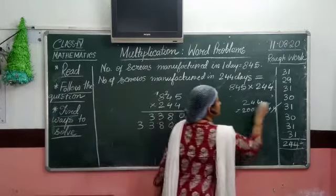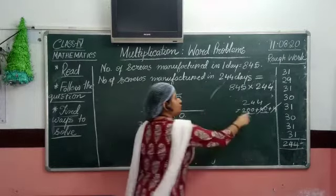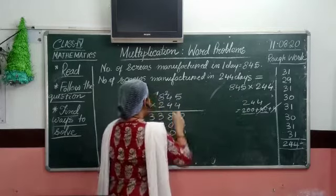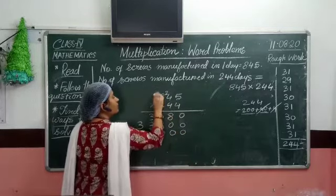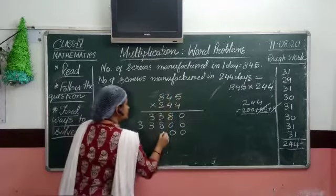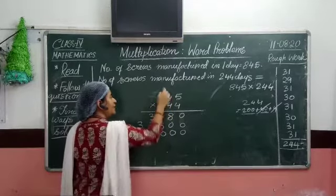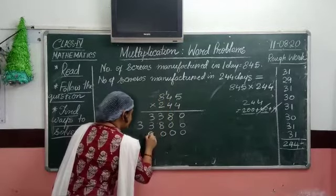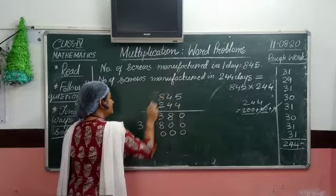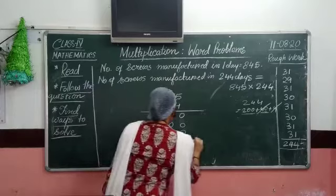Now what's left is 200. For 200 we have two zeros, so let me put the two zeros first. Now 845 multiplied by 2: two fives are 10, carry 1. Two fours are 8; 8 plus 1 is 9, no carry. Two eights are 16, so I simply write 16 here.